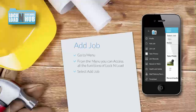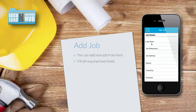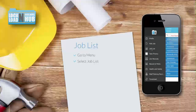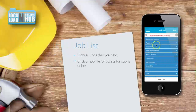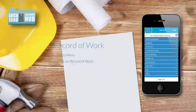From the menu, click on 'Add Job' to create a new job file and fill in the details. From the menu, click on 'Job List' to view a list of all the jobs that you have in Lock and Load. Click on the relevant job file to access functions for that specific job.